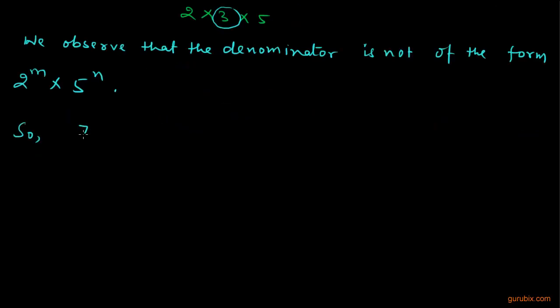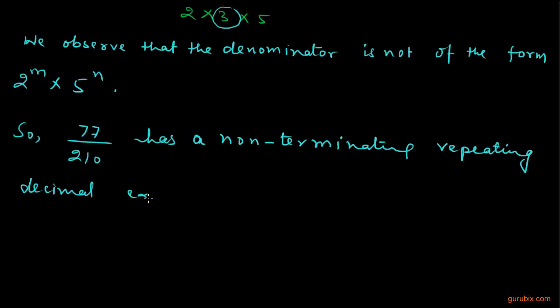So we conclude that 77 over 210 has a non-terminating repeating decimal expansion. This is the end of the solution.